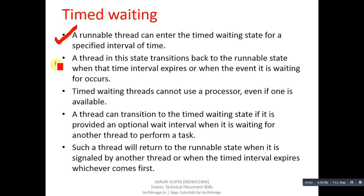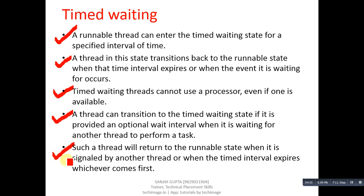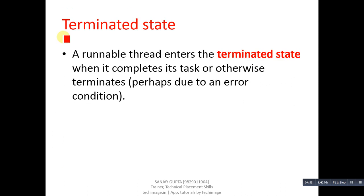A thread in the Timed Waiting state transitions back to the Runnable state when that time interval expires or when the event it is waiting for occurs. Timed waiting threads cannot use a processor even if one is available. A thread can also transition to the Timed Waiting state if provided an additional wait interval while waiting for another thread, returning to Runnable when signaled or when the interval expires, whichever comes first.